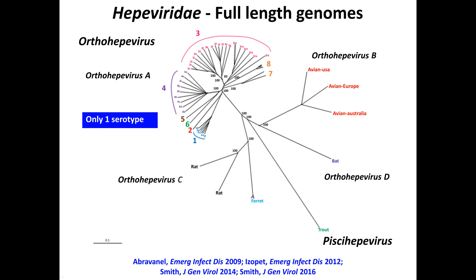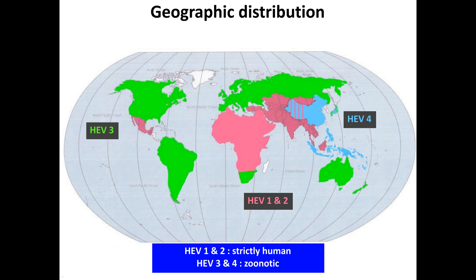The main genotypes are genotype 1, 2, 3, and 4. These genotypes are located in different parts of the world. Genotype 1 and 2 are found in low-income countries and are strictly found in humans, transmitted via contaminated water. Genotypes 3 and 4 are found in many other parts of the world — mainly Asia for genotype 4 and elsewhere for genotype 3. Genotypes 3 and 4 are zoonotic, with a large animal reservoir mainly constituted by pigs, wild boar, deer, and rabbit.